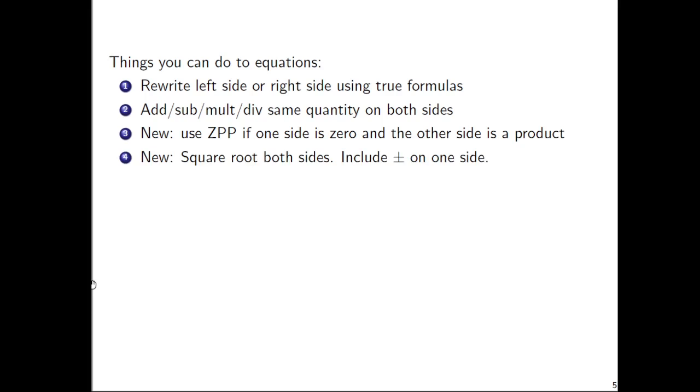And maybe less new, but we're going to see a lot more of this, so new-ish. You can square root both sides of an equation. And when you do that, you need to be sure to include a ± sign on one side, the side of your choice.